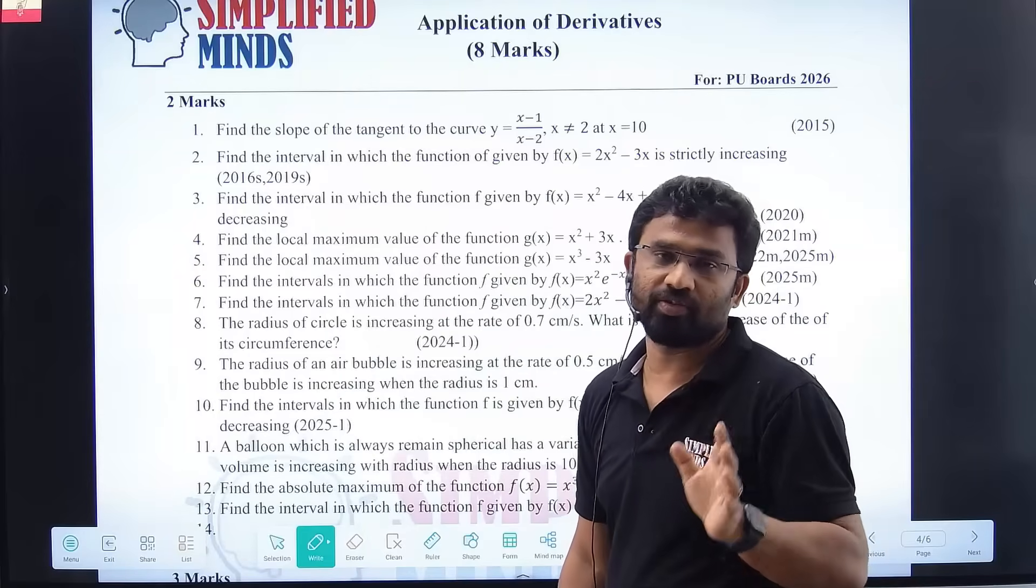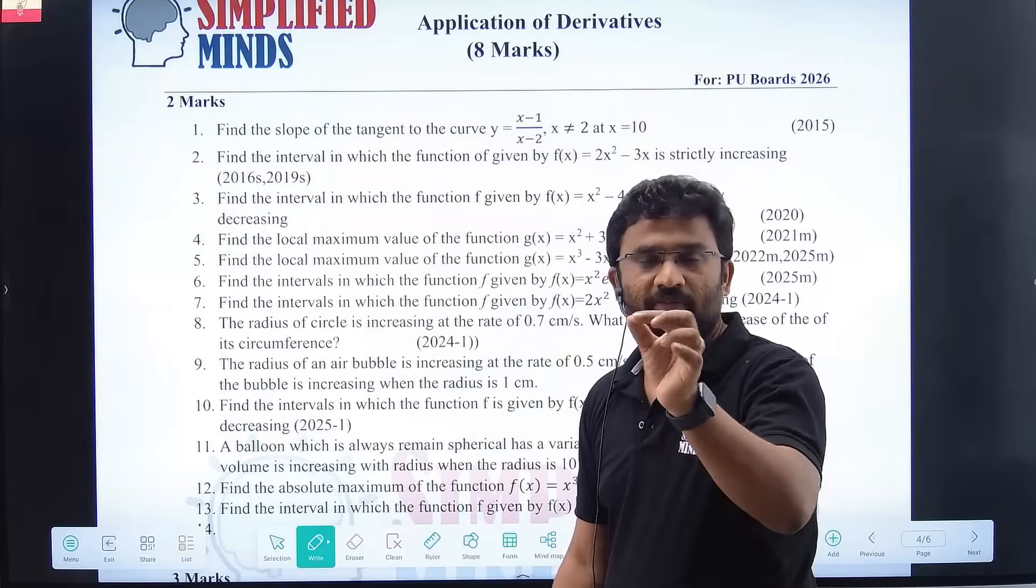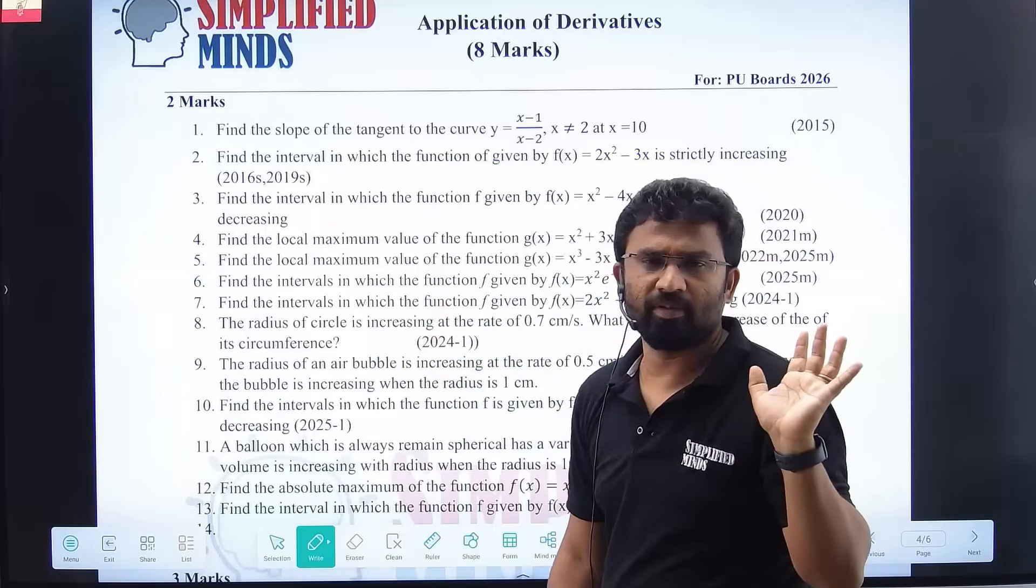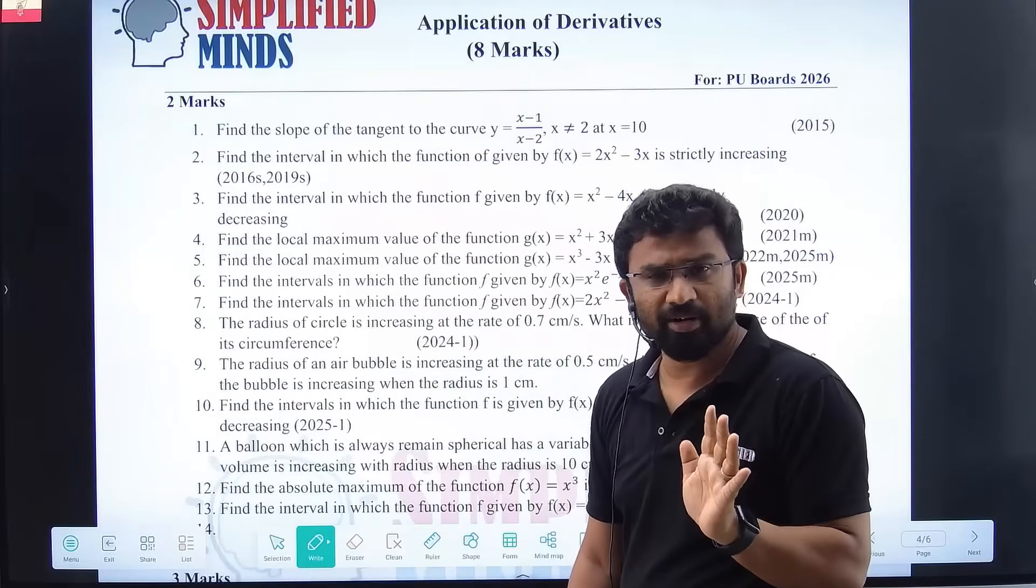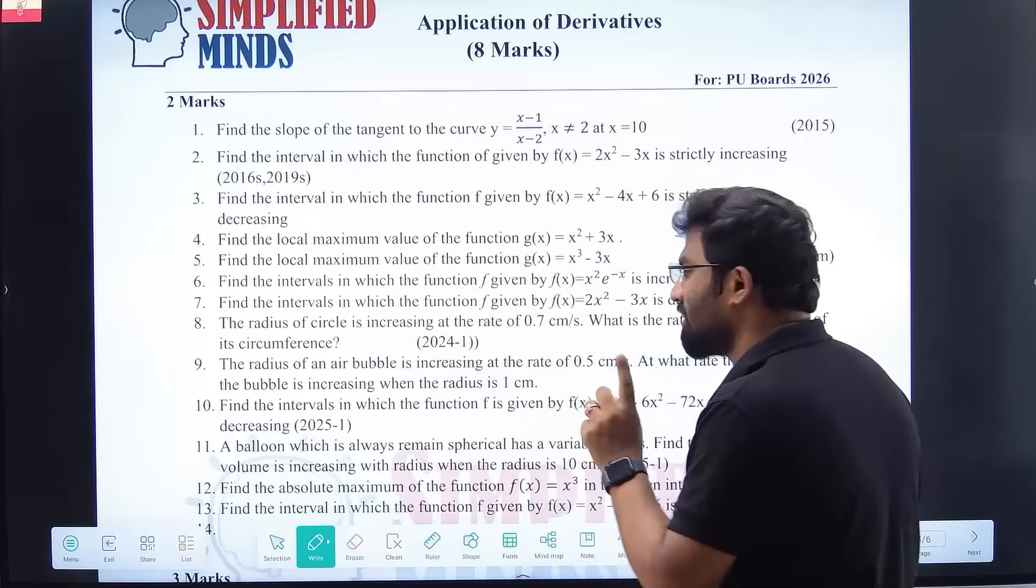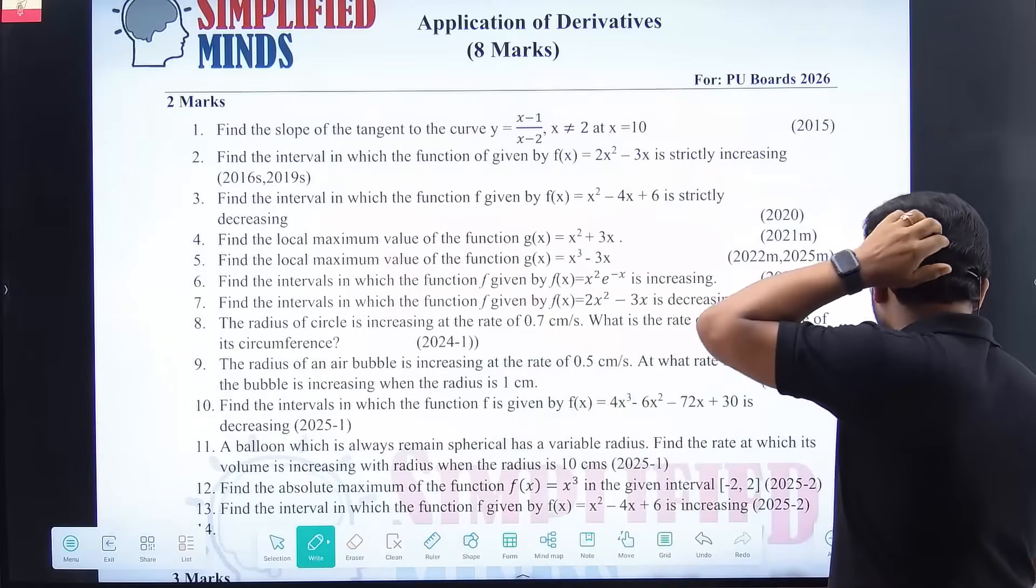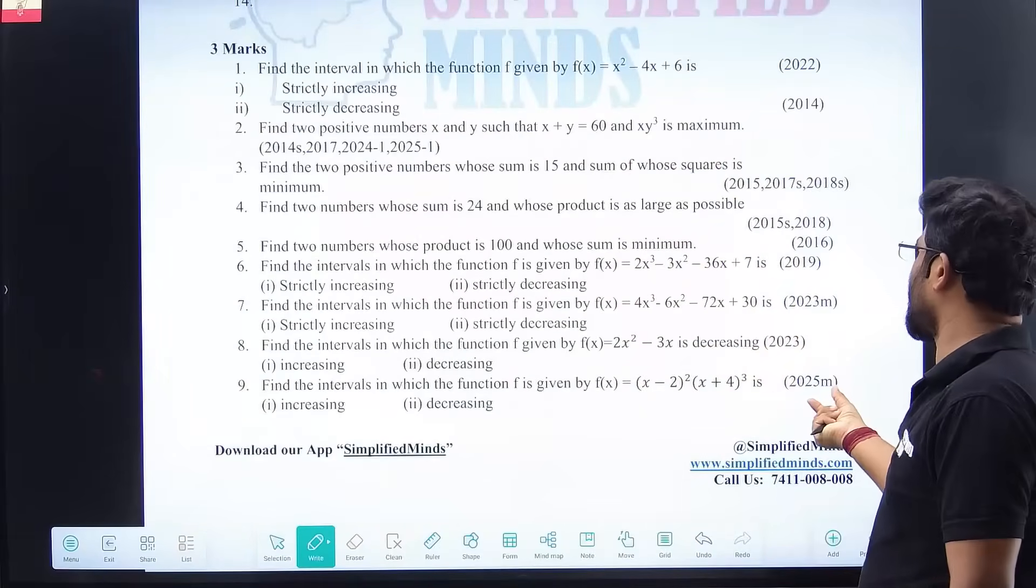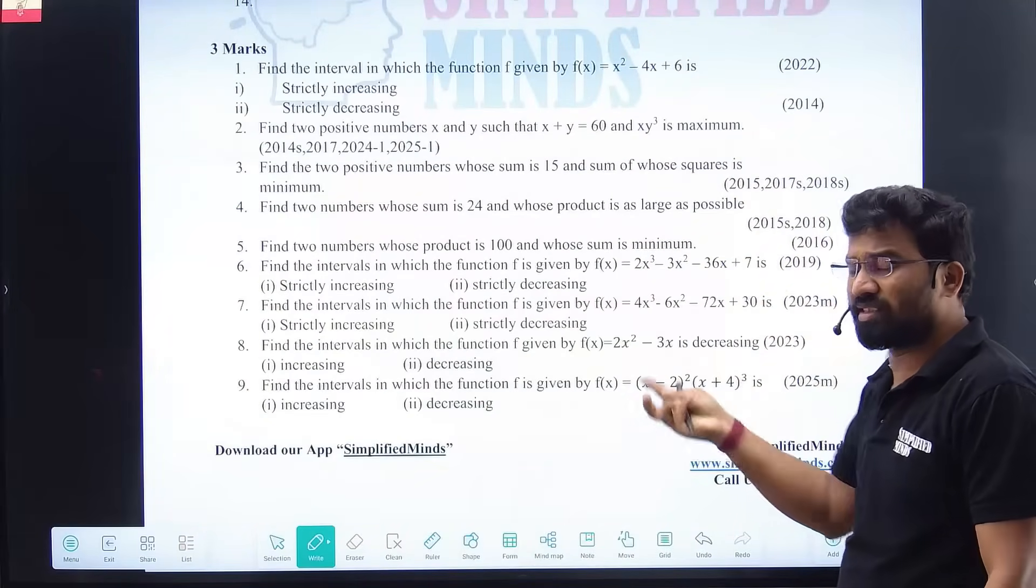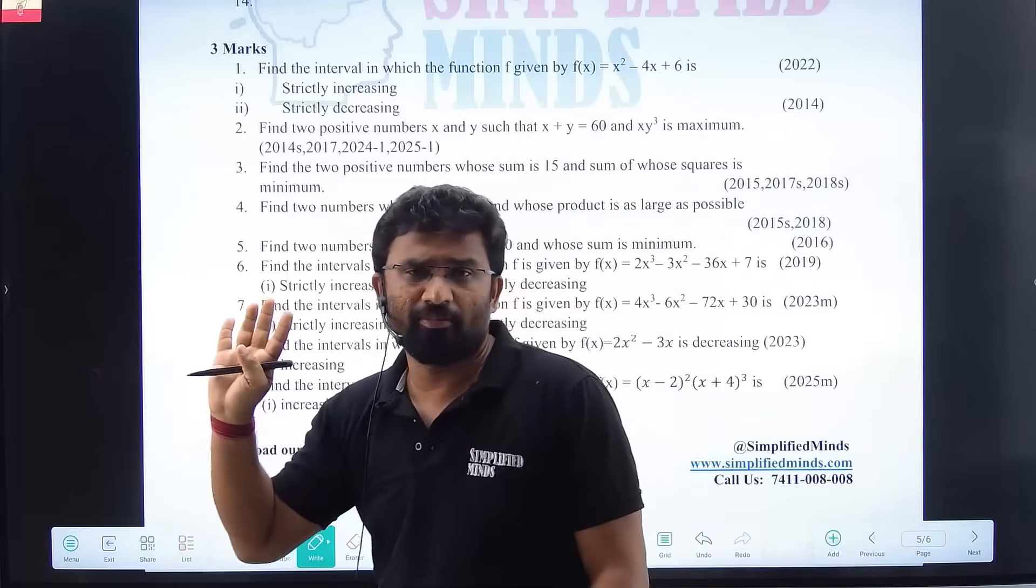Watch Simplified Minds one-shot lectures. We'll prepare simplified minds chapter-wise. Almost everything. Last year's lectures—we'll upload this one-shot lecture. I want everyone's target to be 75 plus. And these PDFs are available in Simplified Minds app. Same thing. I've given all last year's model papers. You have to complete all the papers. You have to complete the PDFs.